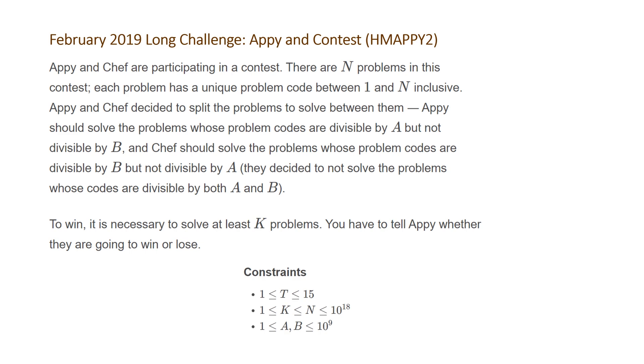The values of k, the number of problems they need to solve in order to win, and the total number of problems n are going to be between 1 and 10 to the 18, and A and B, the divisibility factors, are going to be between 1 and 10 to the 9.